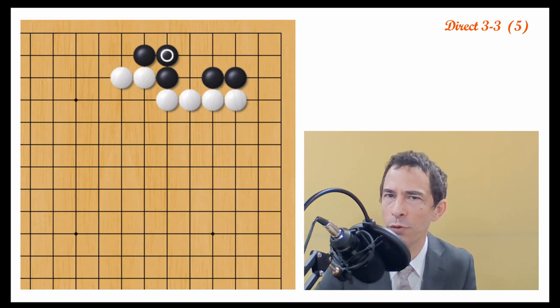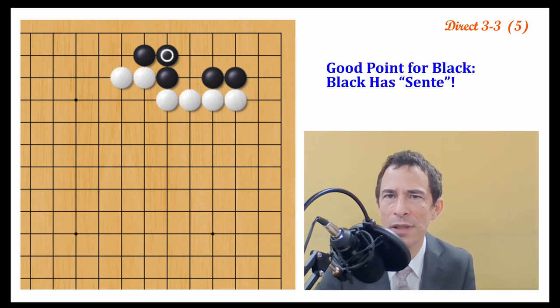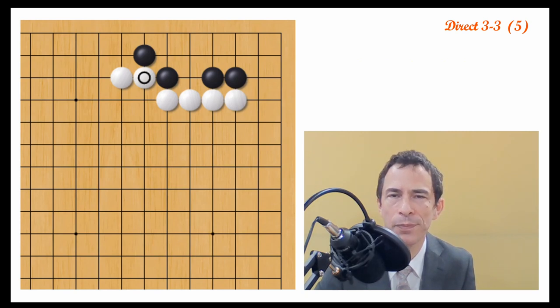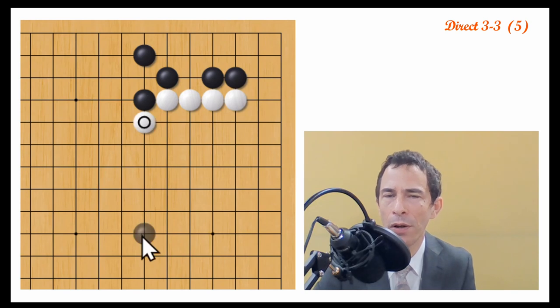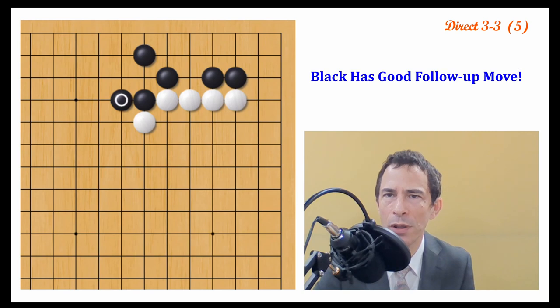The good point for black, of course, is that black has sente. Having the initiative in early stages of the game is always important. If white plays away now, then black's next move would be to play here and extend or play the double hane. Usually extending is good. This would give black a very good position towards the upper side, towards the left of the screen.